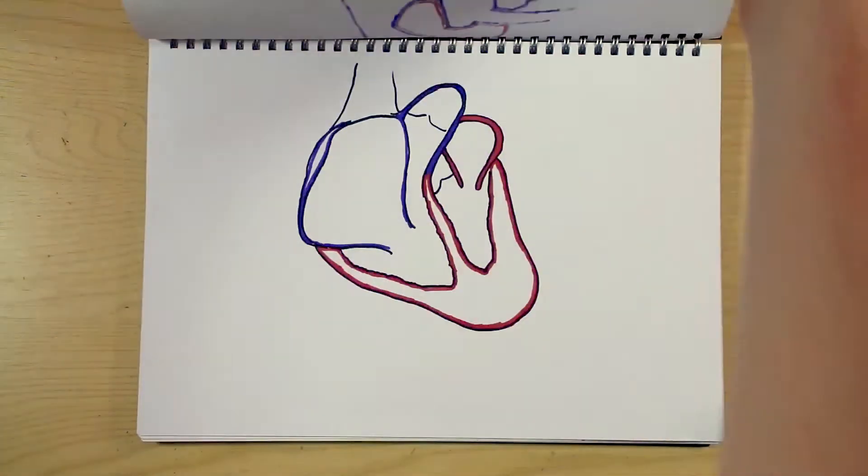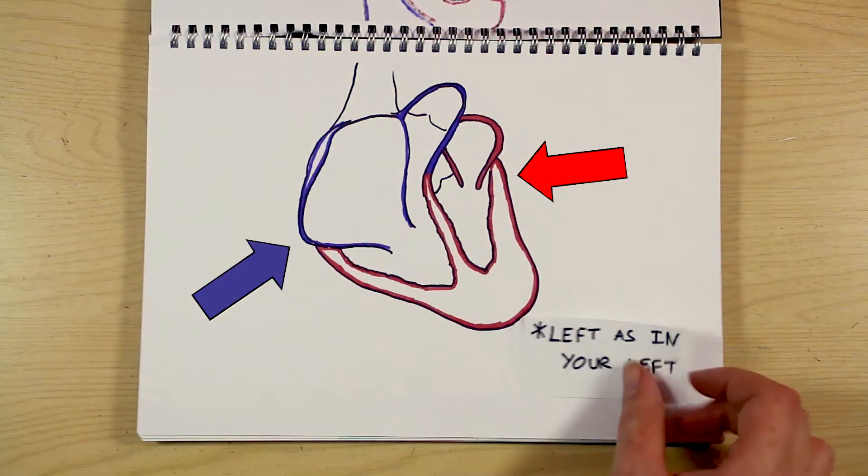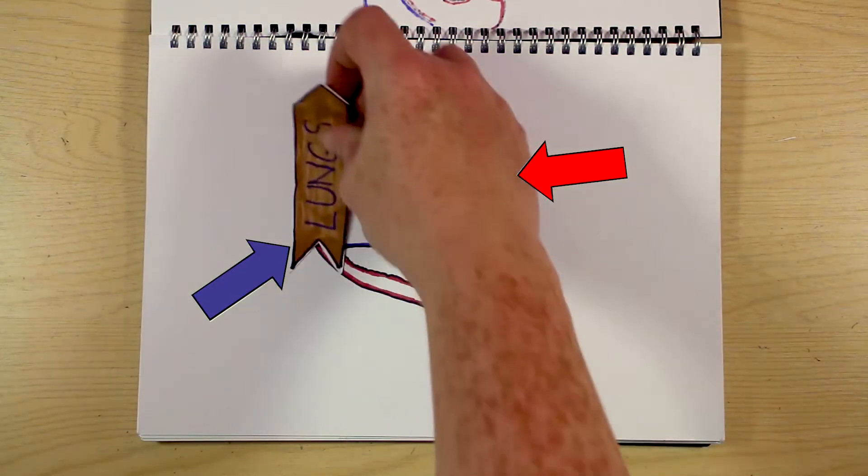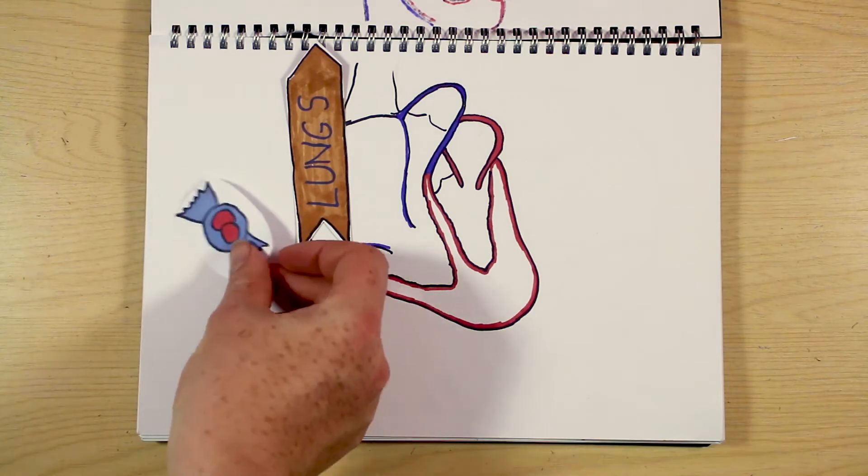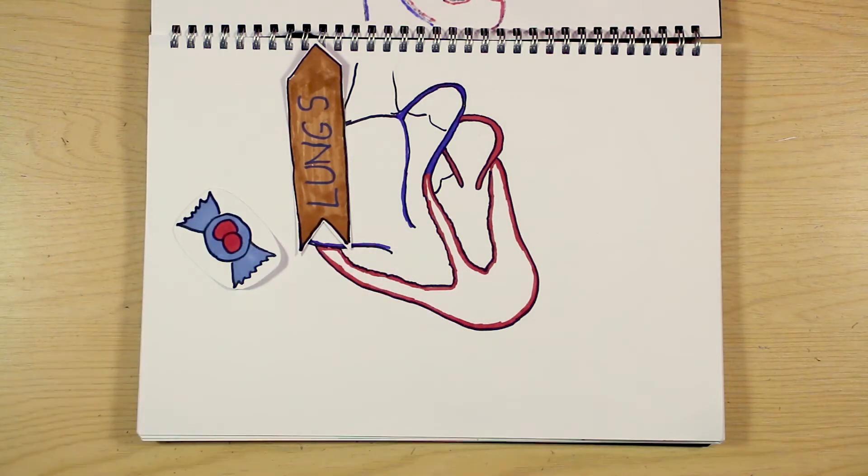The heart is actually two pumps stuck together, the left and right side. The right side pumps blood to the lungs to get enriched with sweet, sweet oxygen, and the left side pumps it around the body.